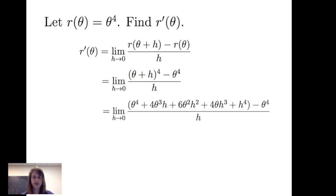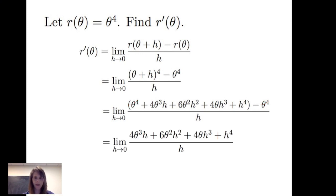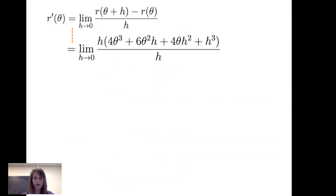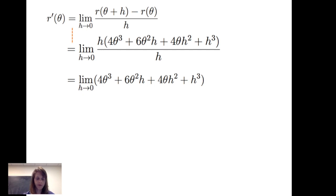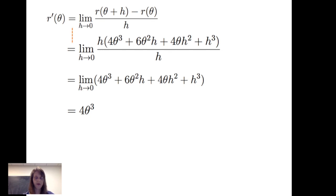We expand theta plus h to the fourth power as theta to the fourth plus 4 theta cubed times h plus 6 theta squared h squared plus 4 theta times h cubed plus h to the fourth, minus theta to the fourth, all over h as h goes to 0. The positive and negative theta to the fourth terms cancel to 0. We then note that we have a factor of h in each term of the numerator, so we factor that h out.